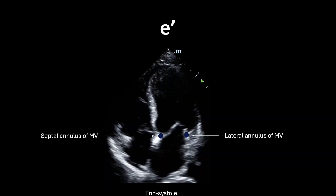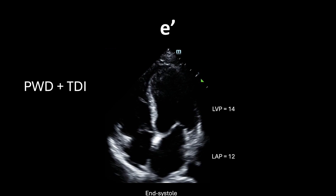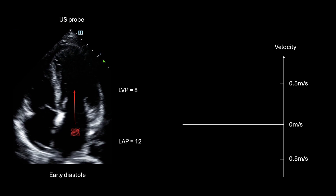Let's move on to E-prime. Two important anatomic landmarks are the septal annulus and the lateral annulus of the mitral valve — the attachment points of the mitral valve leaflets to the LV muscle. E-prime reflects the movement of these two muscular points during diastole. To measure the velocity of muscle tissue, use pulse wave Doppler with tissue Doppler imaging, often labeled TDI on your ultrasound machine. Place the pulse wave Doppler on the septal annulus to calculate septal E-prime, then on the lateral annulus to calculate lateral E-prime. As the LV fills with blood in early diastole, it expands circumferentially and longitudinally, causing the annuli to move away from the probe at the LV apex, resulting in a negative deflection termed E-prime.